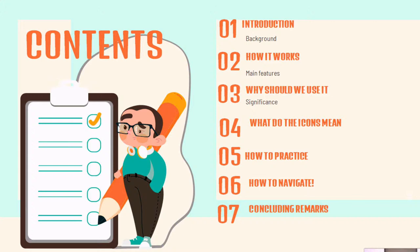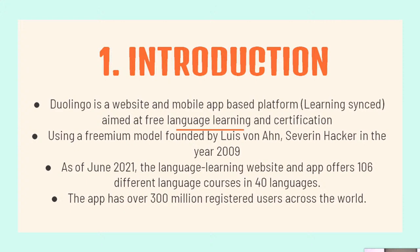Duolingo is a website and mobile app-based platform. It is a dual feature and also a cross-platform-based software. You can use it on your mobile phone as well as your computer system. One more feature is that when you are using it on one system, you can pause your progress on that system, and when you switch to another system, you can continue where you left off. This is the cross-platform feature that Duolingo offers.